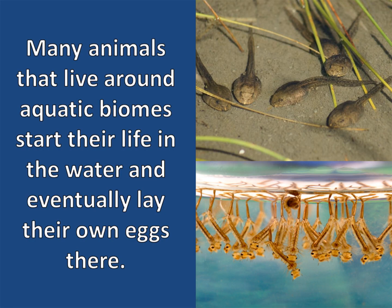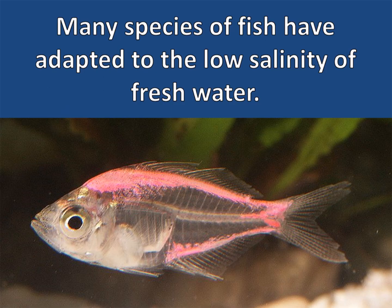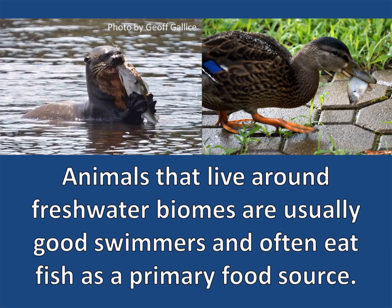Many animals that live around aquatic biomes start their life in the water and eventually lay their own eggs there. These tadpoles will eventually become frogs, and these larvae will eventually become adult mosquitoes. Many species of fish have adapted to the low salinity of fresh water. Animals that live around fresh water biomes are usually good swimmers and often eat fish as a primary food source.